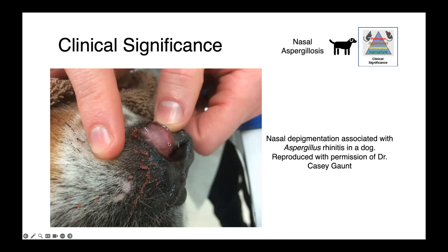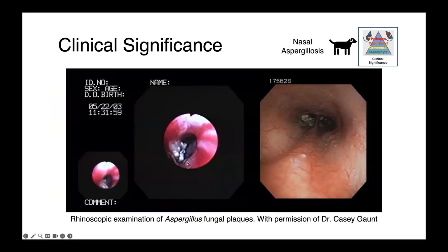You can see the mucosa on the inside of this dog's nose is quite pink compared to the rest of the nasal epithelium. These are still shots from a rhinoscopic examination of a dog with nasal aspergillosis, and you can appreciate these fungal plaques. You drive in with a scope and actually see the mats of mycelium growing in the nose.